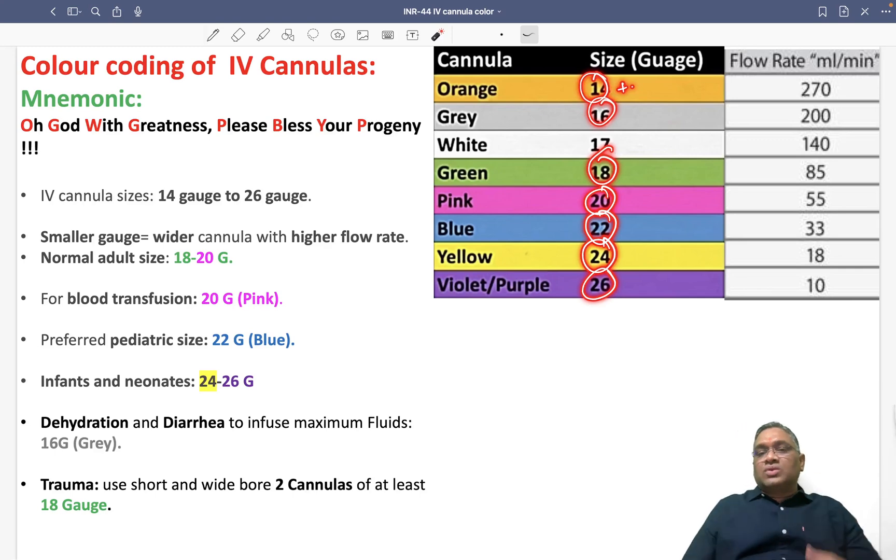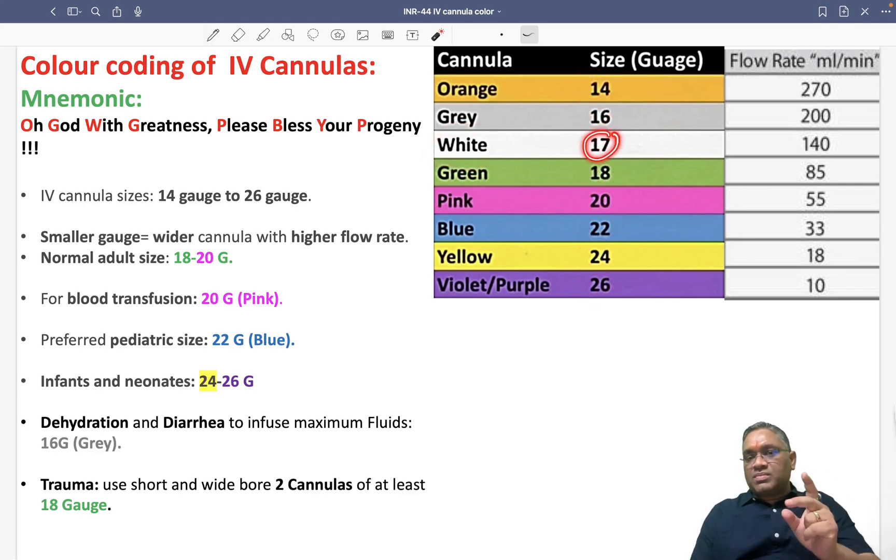There is one entry between 16 and 18 - the white color. White is the odd one at 17 gauge. You have to remember white is odd at 17, otherwise everyone has an interval of 2.